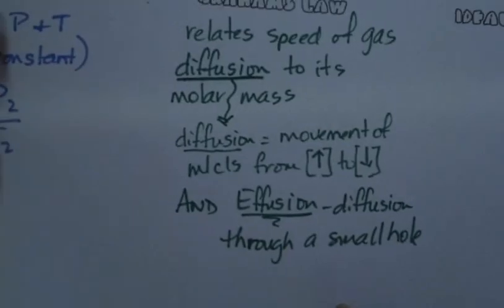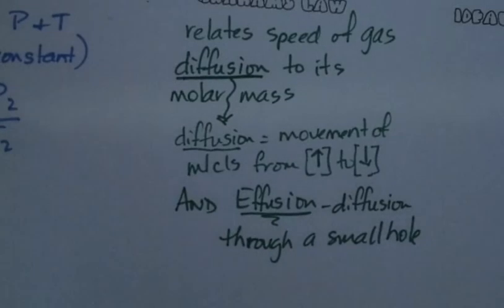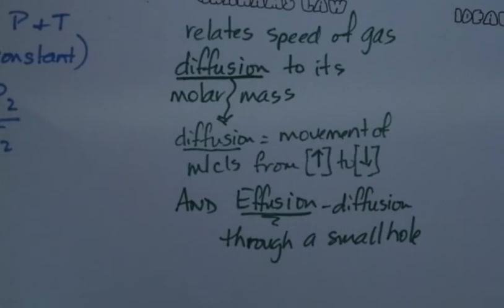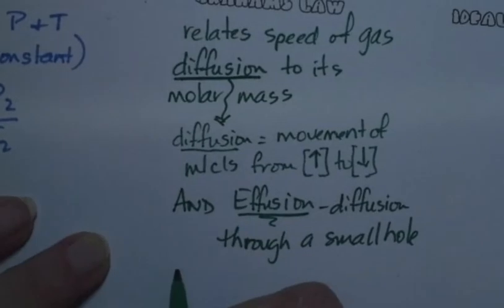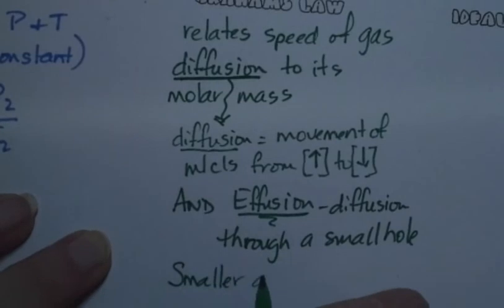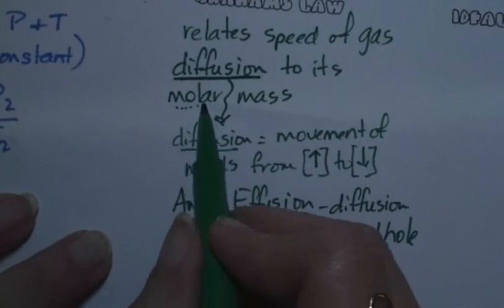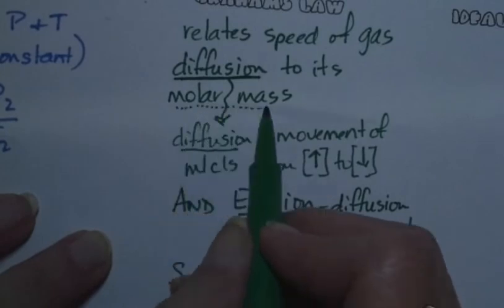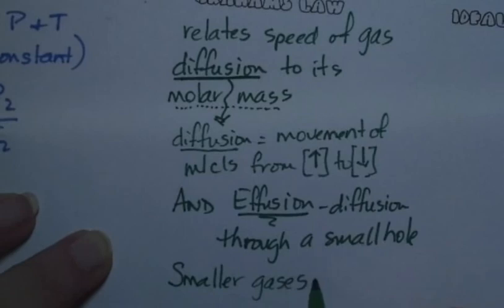Think of a balloon with a pinhole in it. It contains carbon dioxide, nitrogen, and oxygen. Which molecules come out first? The ones that move fastest. Smaller molecules move faster — we're talking about molar mass here. If they weigh less they move faster; the bigger ones are slow and lumbering.